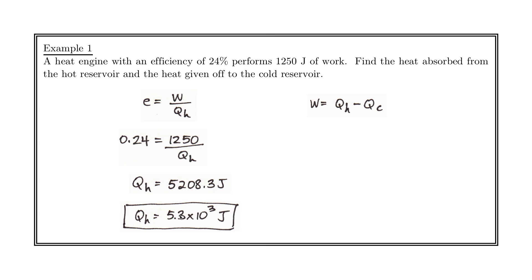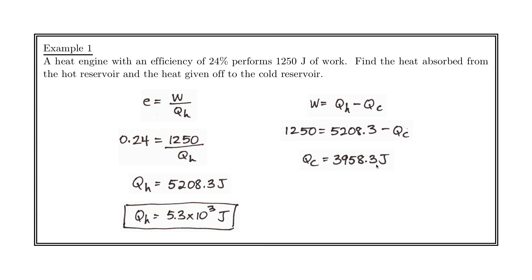This should be 5.2, not 5.3. If we want to find QC — the heat that's given off to the cold reservoir — we use W equals QH minus QC, because we have the work and we've just calculated QH. We solve for QC and find that QC is 3,958.3 joules, rounding to 4.0 times 10 to the 3 joules.